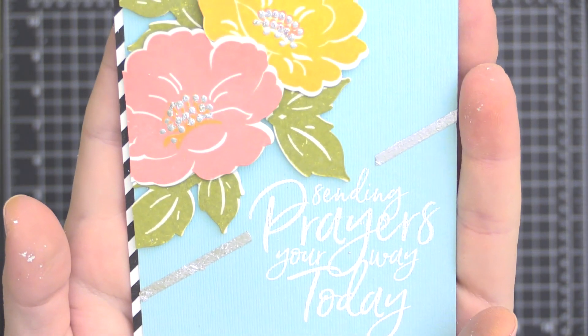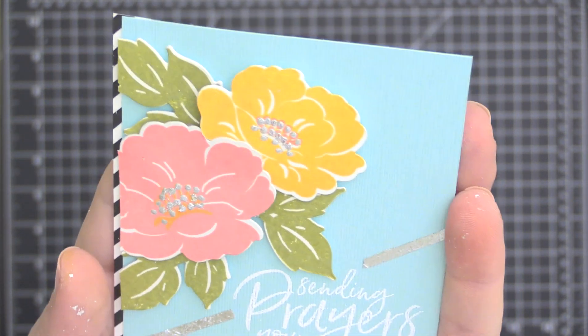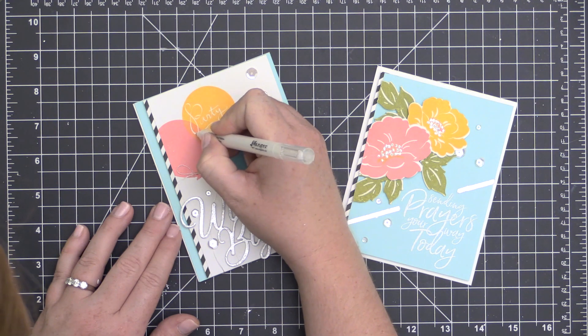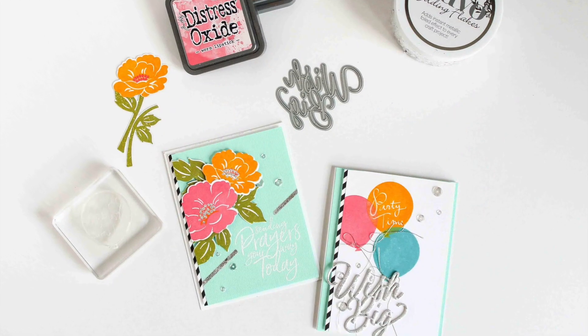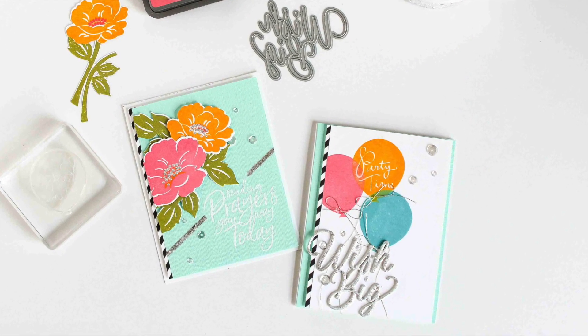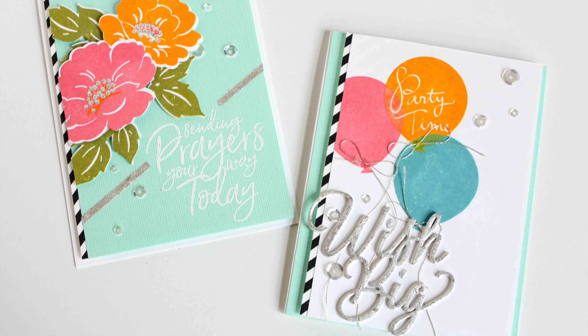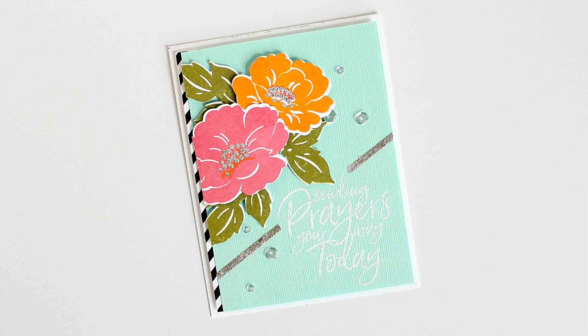And you can see here the details that I added to the centers of my flowers as well as that faux tin or aluminum line that I have along the card front there. Now to restore that area of the sentiment that kind of got lost there, I just went over the area with a white paint pen. I was very careful and just traced over the line that I could see to kind of restore that bright white appearance. And I finished off these cards with some sparkling clear sequins.